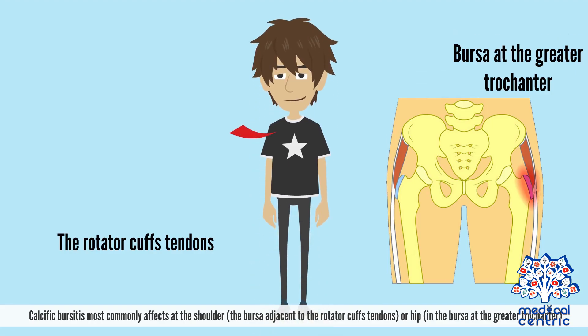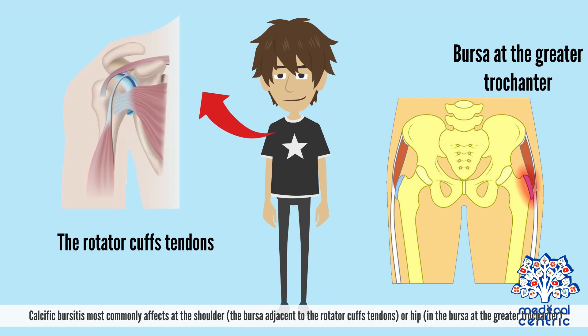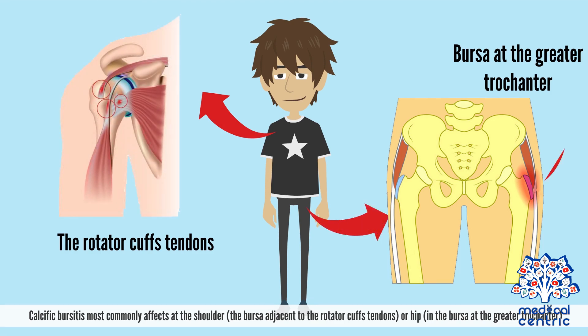Calcific bursitis most commonly affects the shoulder — the bursa adjacent to the rotator cuff's tendons — or the hip, in the bursa at the greater trochanter.